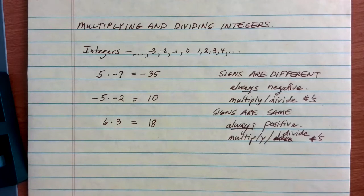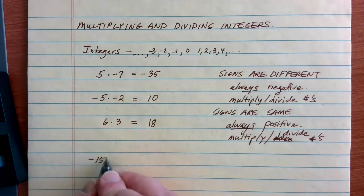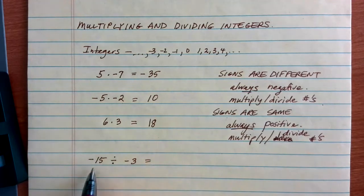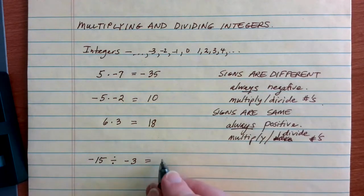So, this stuff all works like normal. It also works the same if we're talking about division. If we look at something like negative 15 divided by negative 3, I am doing two negatives. The signs are the same, so my answer ends up being a positive. 15 divided by 3 gives me a positive 5 as a result.